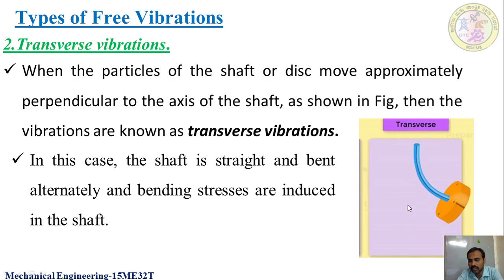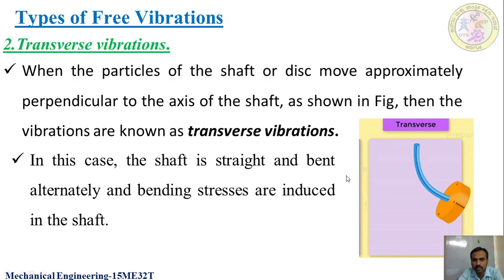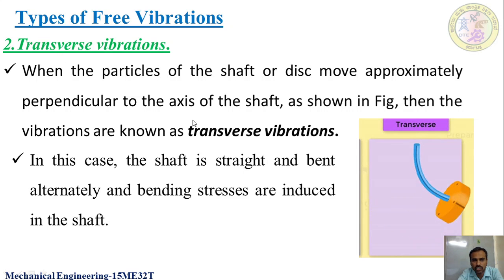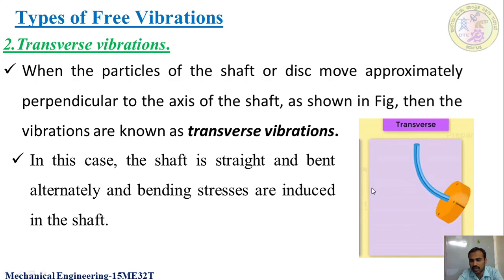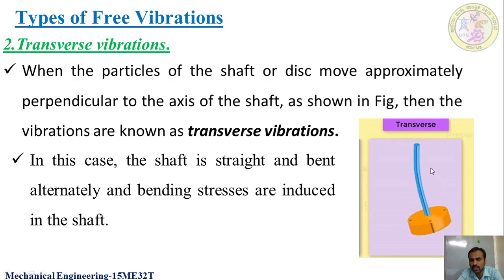You can see in the animation how the shaft moves — the disc or body is moving approximately perpendicular to the shaft. This type of movement is said as transverse vibrations. Here, the shaft is straight and bent alternatively — once it will be straight and now it is bent. Alternatively the shaft will be straight and bent, and due to this a bending stress will be induced in the shaft. That is about transverse vibrations.